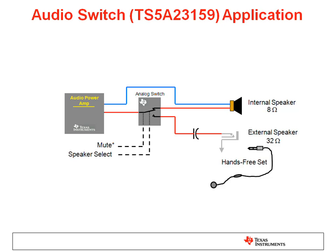An audio switch has the capability to mute the audio signal or to select a speaker. The TS5A23159 is a single pole double throw analog switch designed to operate from 1.65 to 5.5 volts. The device offers a low on-state resistance, excellent on-resistance matching with the break-before-make feature, to prevent signal distortion when transferring a signal from one channel to another. The device also has excellent total harmonic distortion performance and consumes very low power.